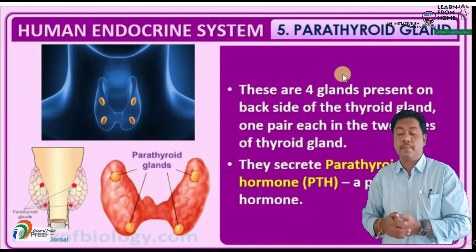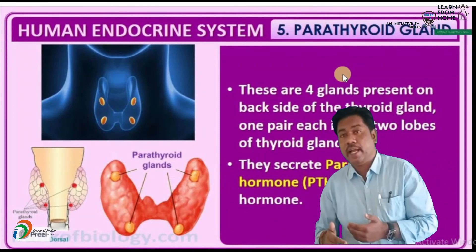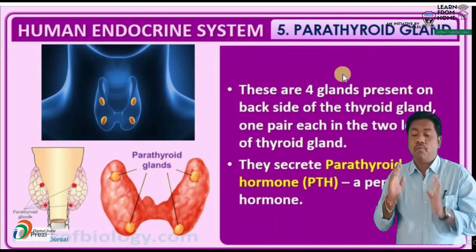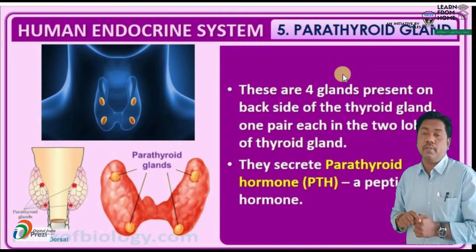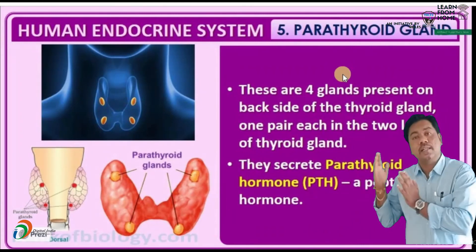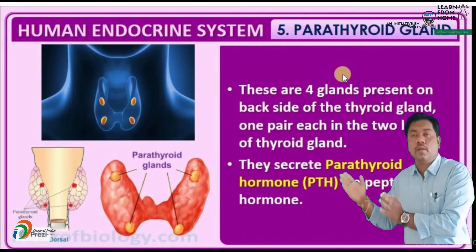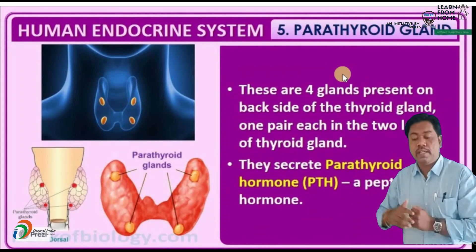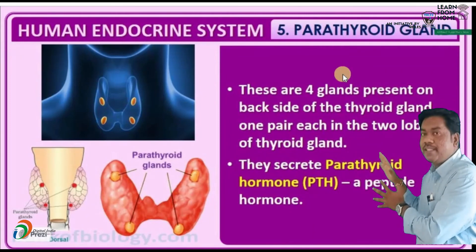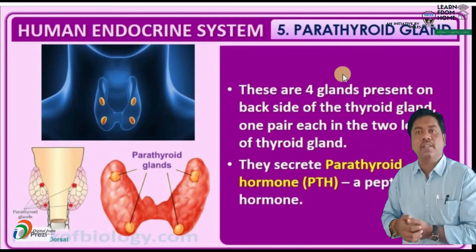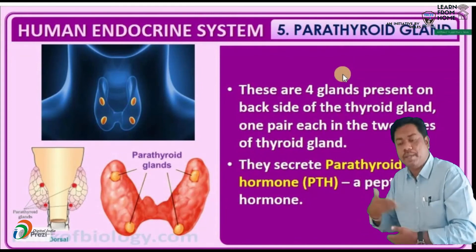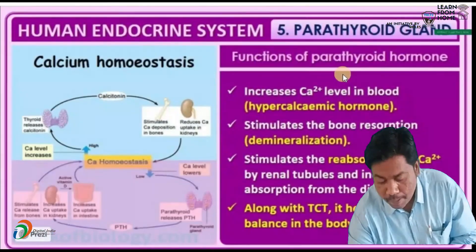The next topic is the parathyroid gland. This parathyroid gland is located on the surface of the thyroid gland — there are four glands present on the back side of the thyroid gland, two on each lobe. These glands are responsible for secreting parathyroid hormone (PTH), also known as parathyroxine. It is a peptide hormone.